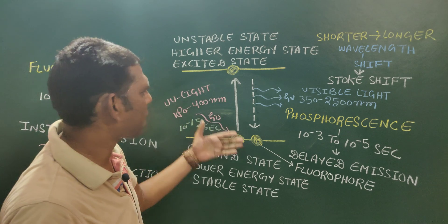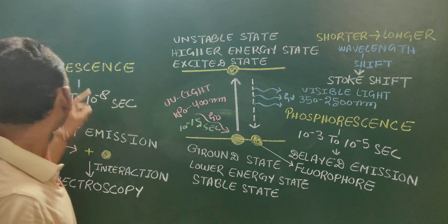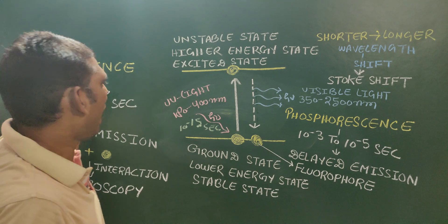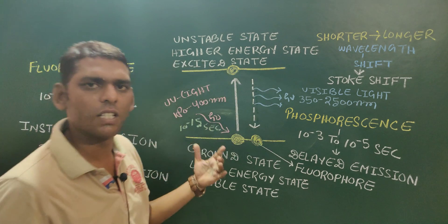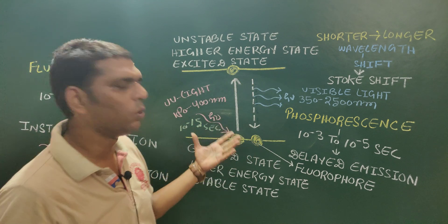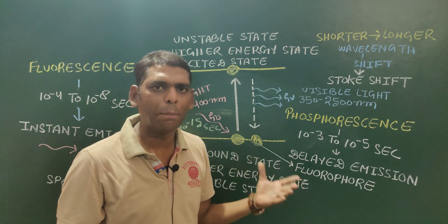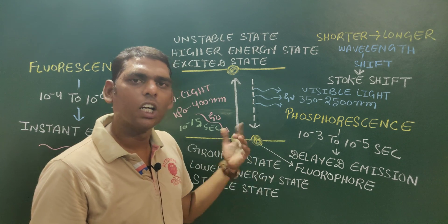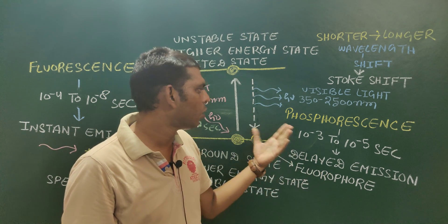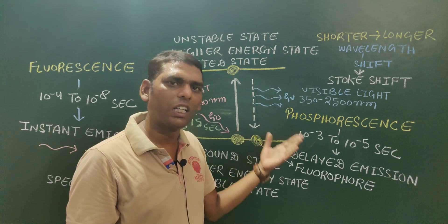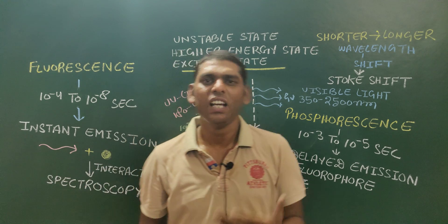In our next video lecture we will discuss why there is a delayed emission in the case of phosphorescence and why there is an instant emission in the case of fluorescence, along with more differences between them. I hope this video helped you understand fluorescence and phosphorescence. If you liked this video, please share it with your friends, subscribe to our channel, and press the bell icon so you get notified when we upload a new video. Thank you for listening. Have a nice day.